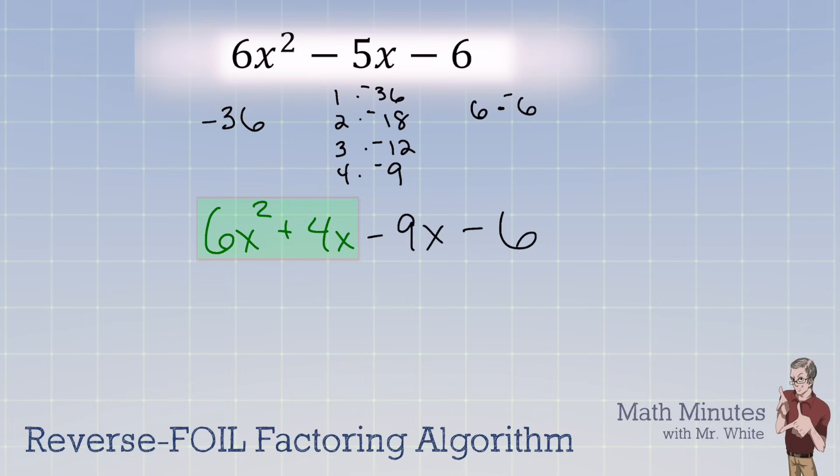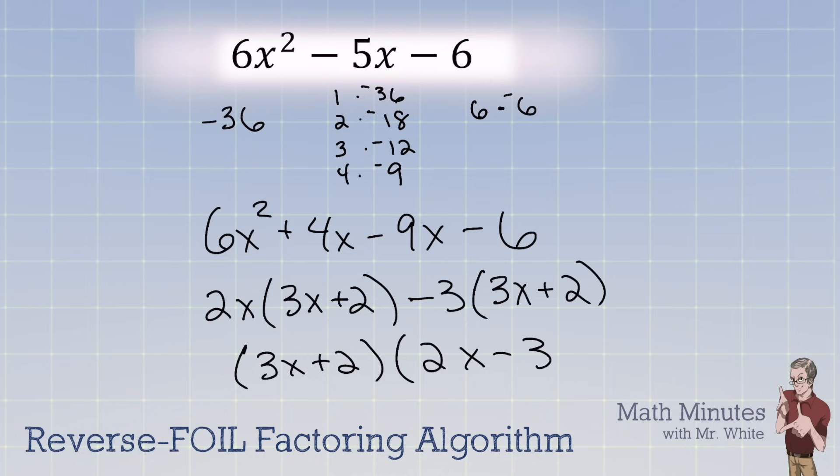The greatest common factor on the first two terms is 2x. That leaves behind 3x plus 2. And on the second one, we're going to have to factor out a minus sign because we really want a positive 3x plus 2. So sometimes you have to make sure that you bring out that negative sign. So I'm going to bring out a negative 3. And that leaves 3x plus 2, just like we had hoped. So the factorization is 3x plus 2 times 2x minus 3.